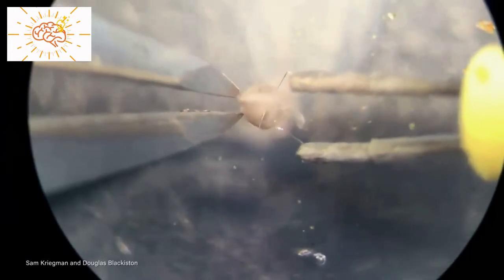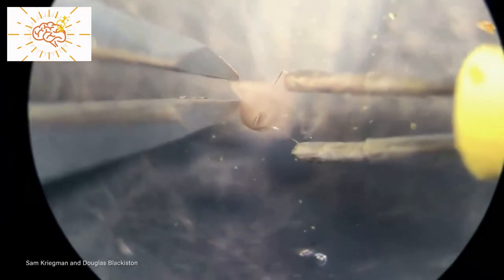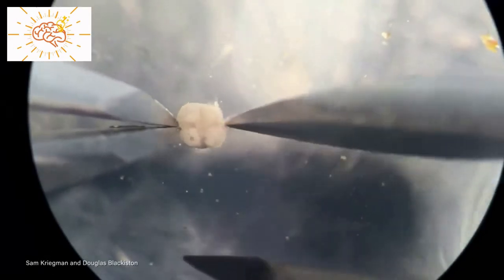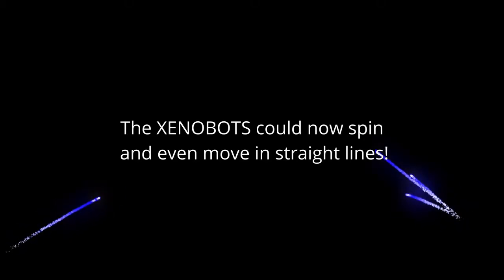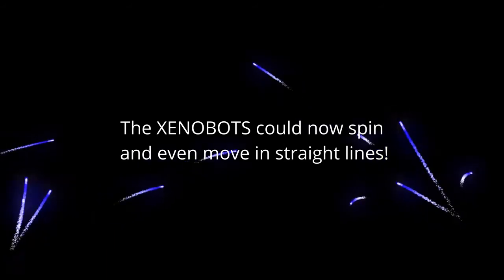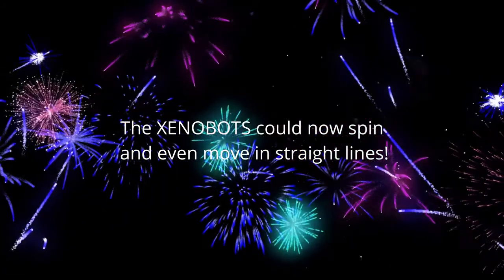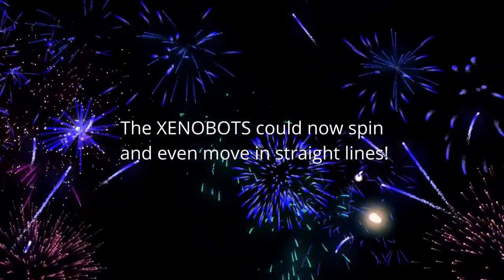And then, the researchers physically shaped the xenobot with surgical precision. This involved hours of laborious work under a microscope. Eureka! The robots could now spin and move in straight lines. So, in this way, the researchers can now move the xenobots in any way they want.